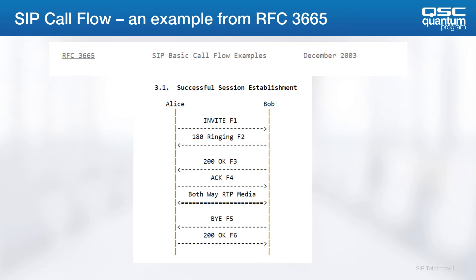This is showing an actual call between Bob and Alice. It assumes that we're registered at this point. The INVITE is initiating the call and then you get a 180 response indicating ringing. Sometimes you'll see a 183 Session Progress, and the difference is that the 183 also indicates that the server might be playing a ringtone or sending some kind of other media before the call is connected. Then we get to the 200 OK and the acknowledgement.